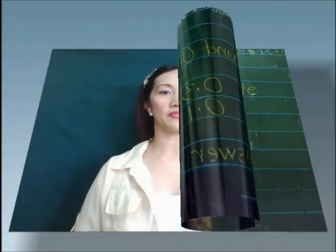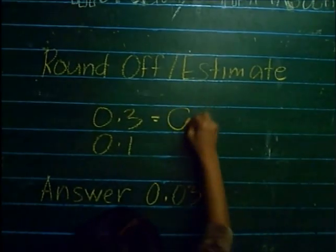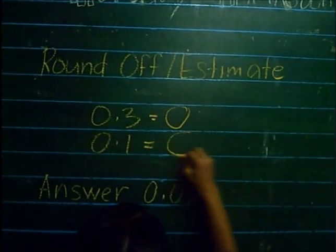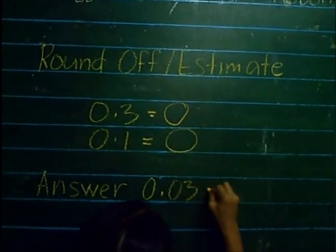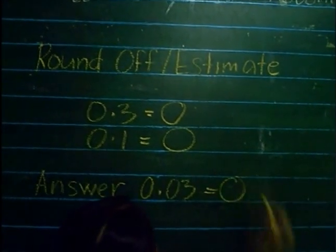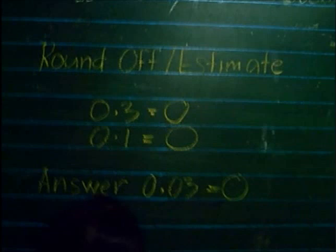The answer is three-hundredths kilometer. If we analyze the answer, it is correct — it must not exceed five-tenths kilometer. If we round off three-tenths, that is close to zero, and one-tenth is also close to zero. So if we estimate, the answer is close to zero, and three-hundredths is indeed close to zero.